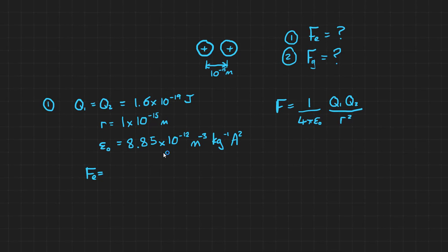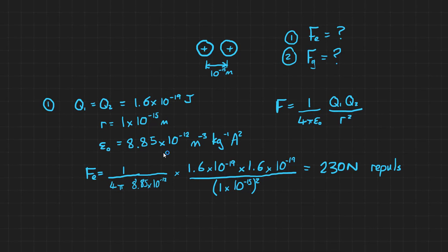Let's call that Fₑ. So 1/(4π × 8.85 × 10⁻¹²) × 1.6 × 10⁻¹⁹ × 1.6 × 10⁻¹⁹ divided by r squared. Don't forget to square the separation: 1 × 10⁻¹⁵ squared. And this gives us a value of 230 newtons. And this is repulsive because both charges are positive.